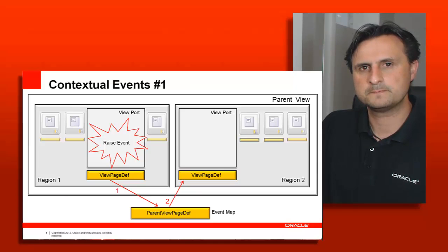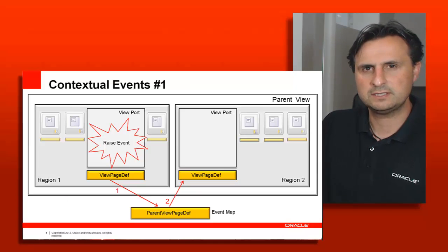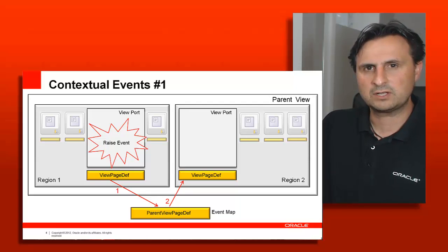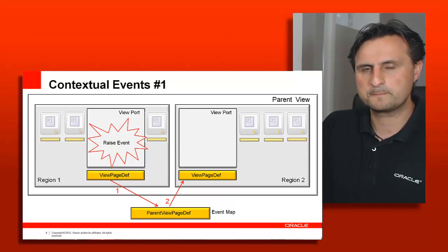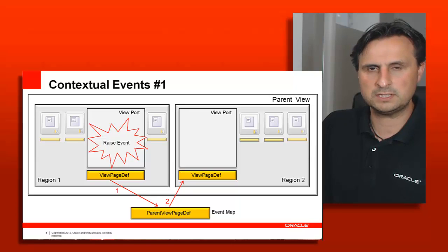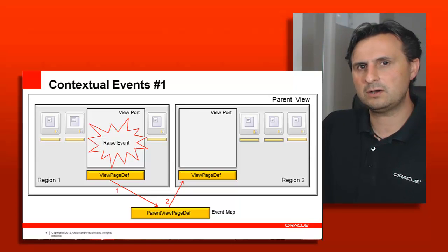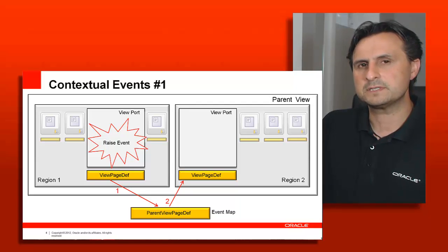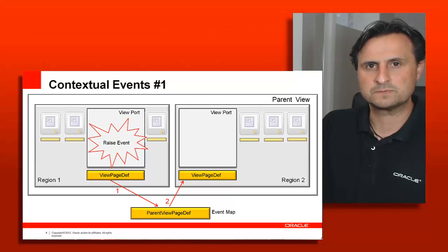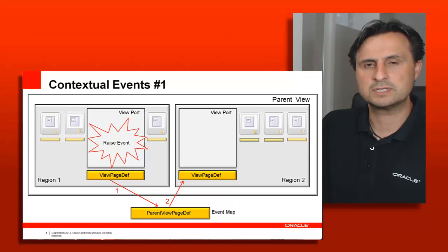Here are some examples. On the first slide you see that the event is raised in region one. From here the event goes up to its own page definition file and its own binding container to see if this event is mapped to a subscriber. If no subscriber is found, it will go to its parent binding container, which is the binding container of the parent view. If the developer has designed a subscriber to this event there, the event will be sent to that subscriber.